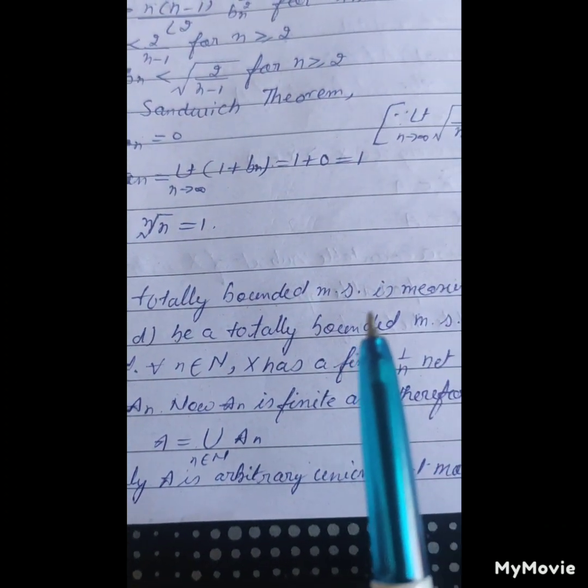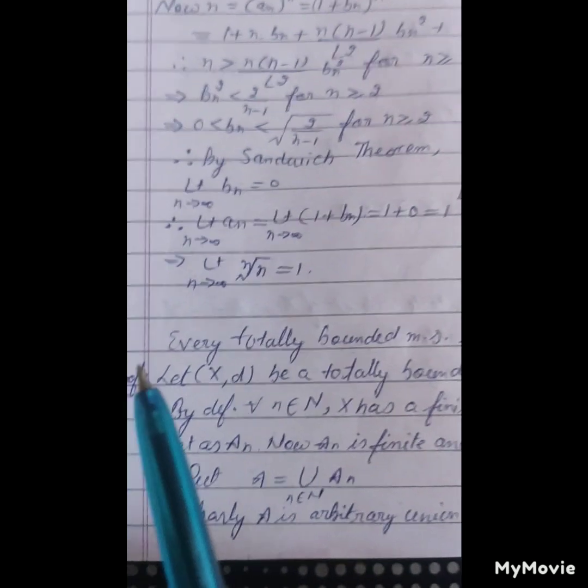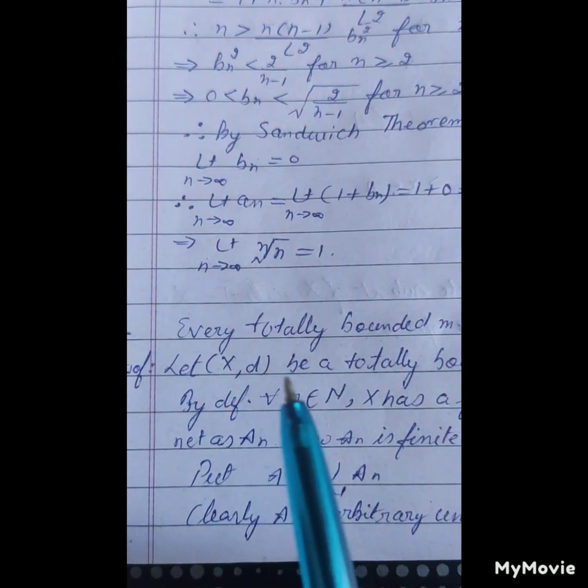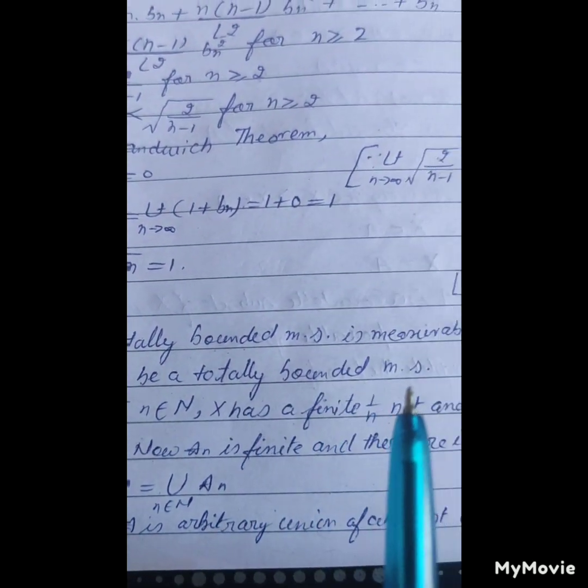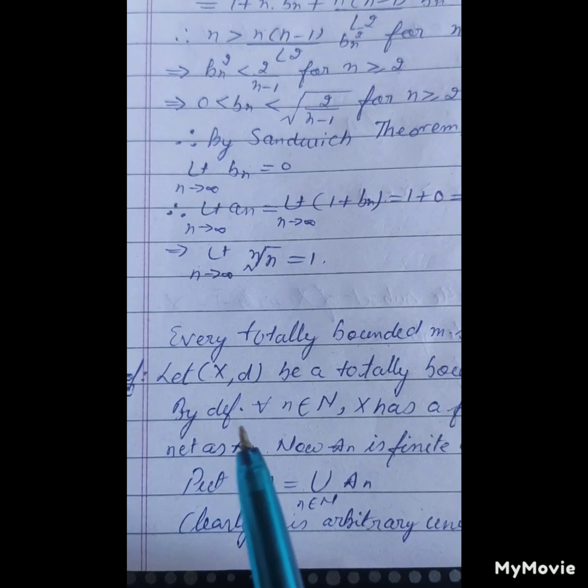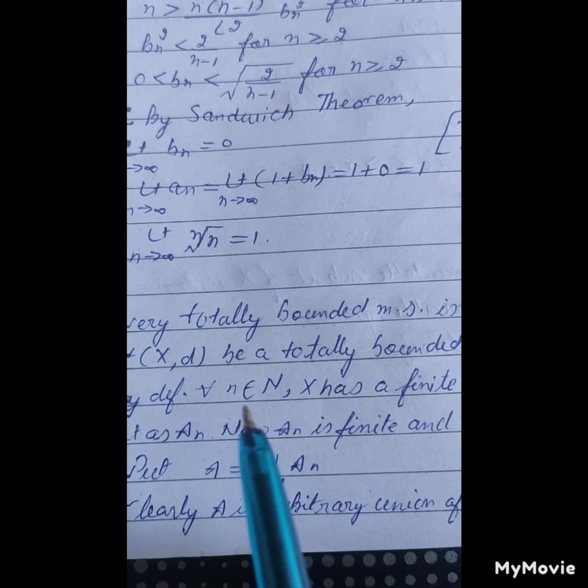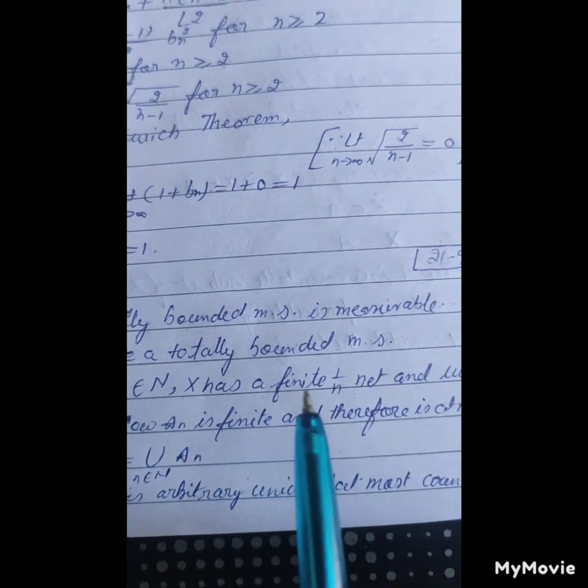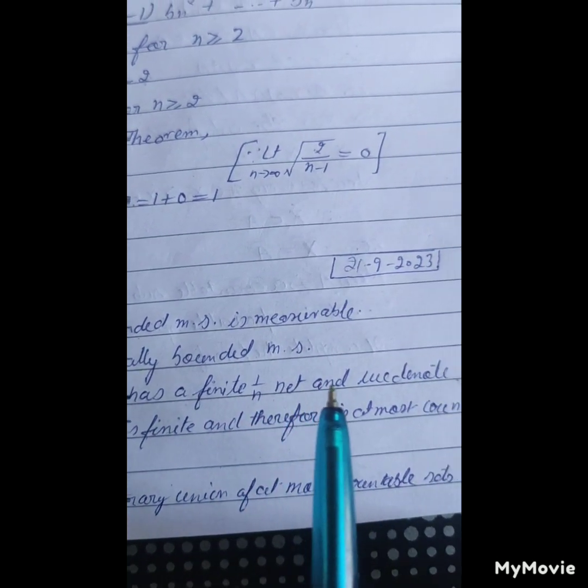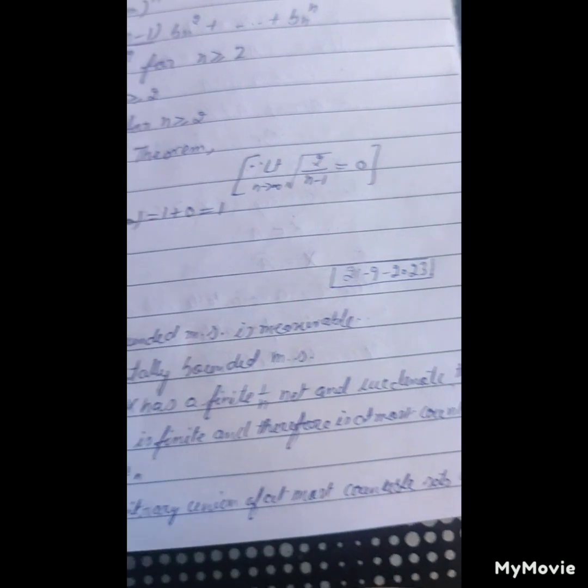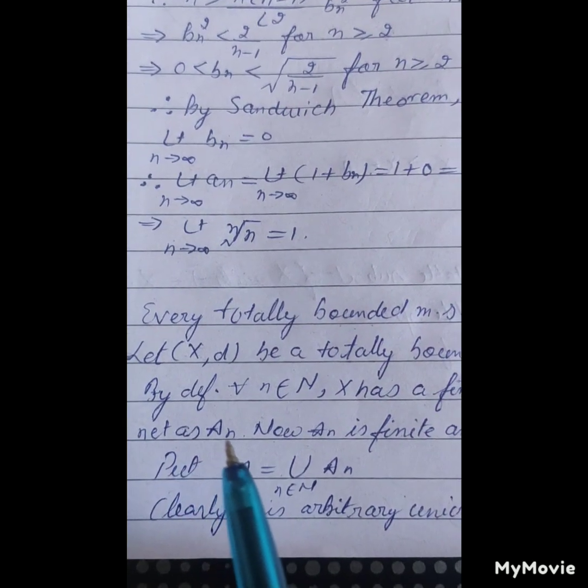Every totally bounded measurable set is measurable. Proof: Let X, d be a totally bounded metric space. By definition, for all values of n belonging to N, X has a finite 1 upon n net, and we denote this net as A_n.